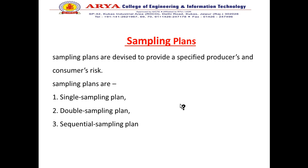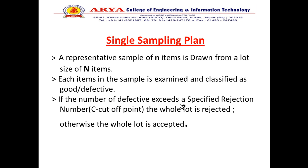There are three types of sampling plans: the first is single, the second is double, and the third is sequential.